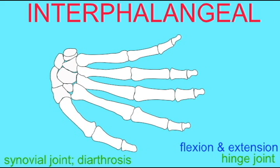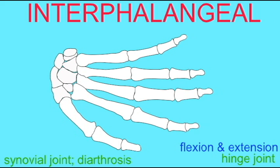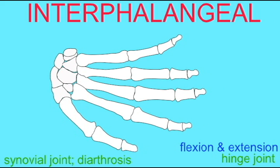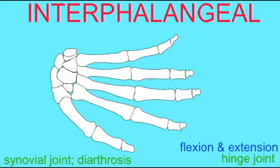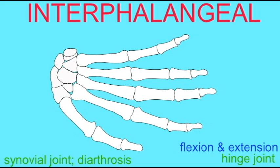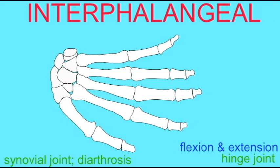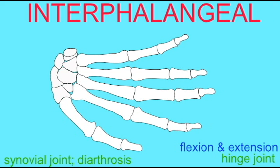These are synovial joints because they have a joint capsule. They are diarthroses because they allow for free movement. They are hinged joints, and as hinged joints, they allow for the flexion and extension of these sections of the digits.